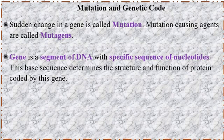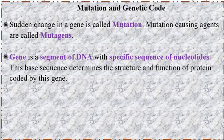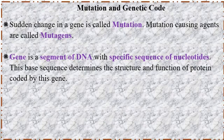Regarding gene function, a gene will code for a particular enzyme or protein. Enzymes are all proteins. Proteins are made up of amino acids, and the sequence of amino acids decides the structure and function of that particular protein or enzyme.